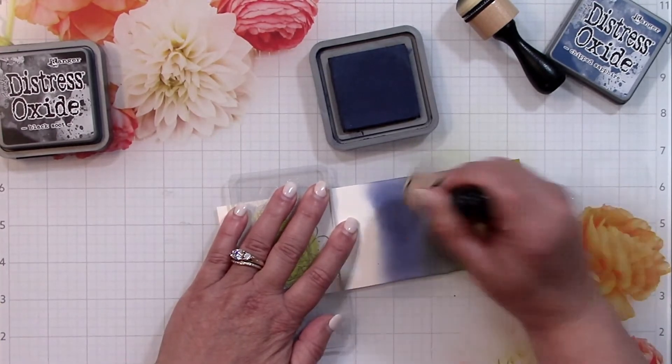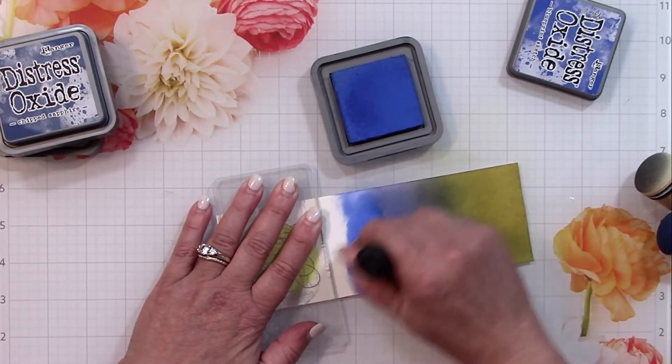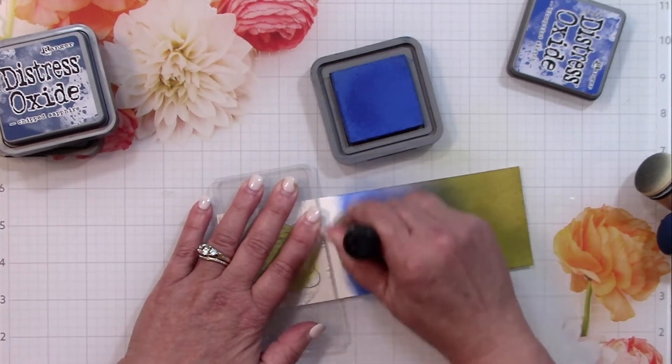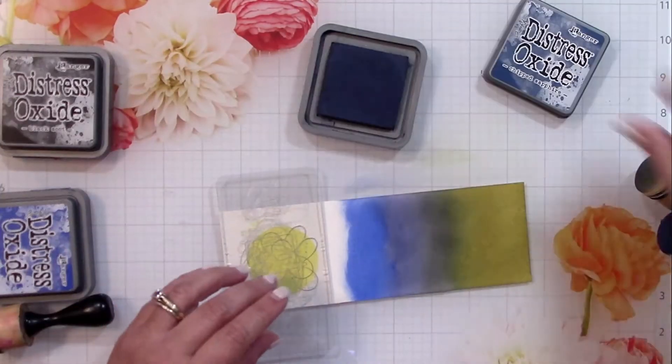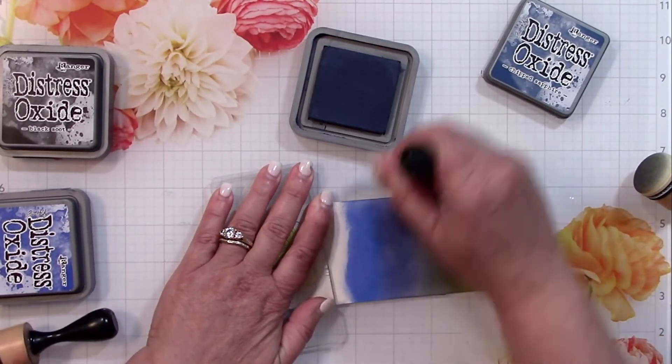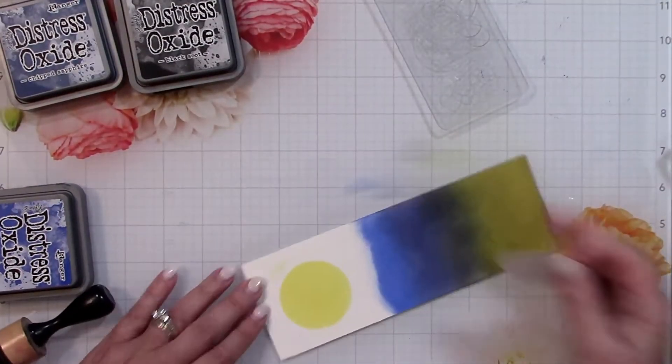As I put in each of these layers, I'm going to go back with the previous color and sort of work on where the two meet to soften the edges a bit. This next color is blueprint sketch, and now I'm going back with the cracked sapphire to soften up the line.